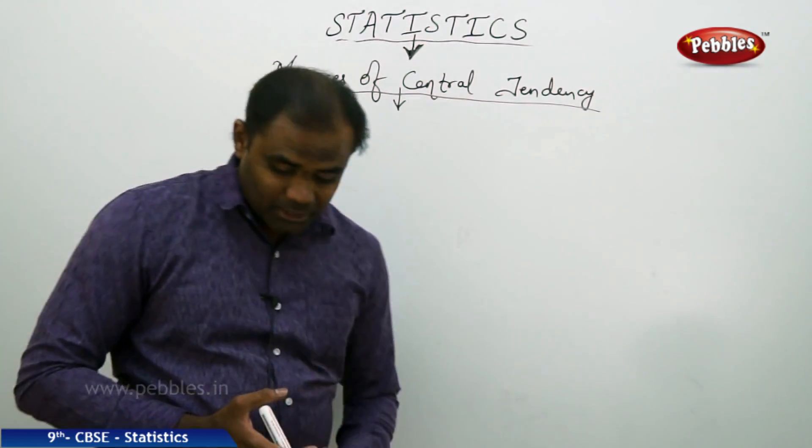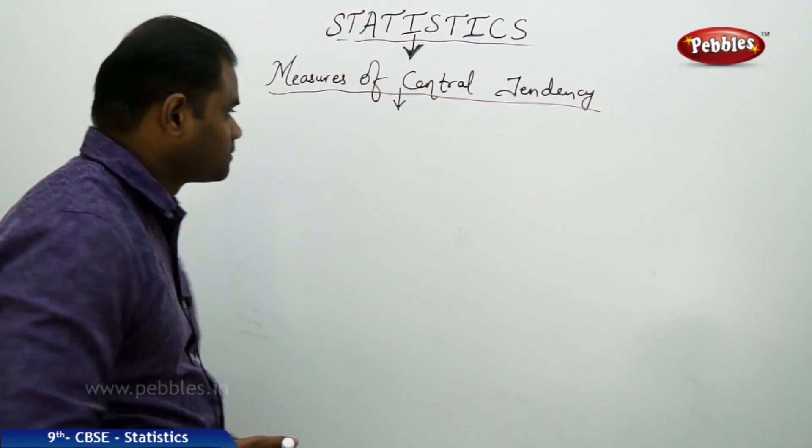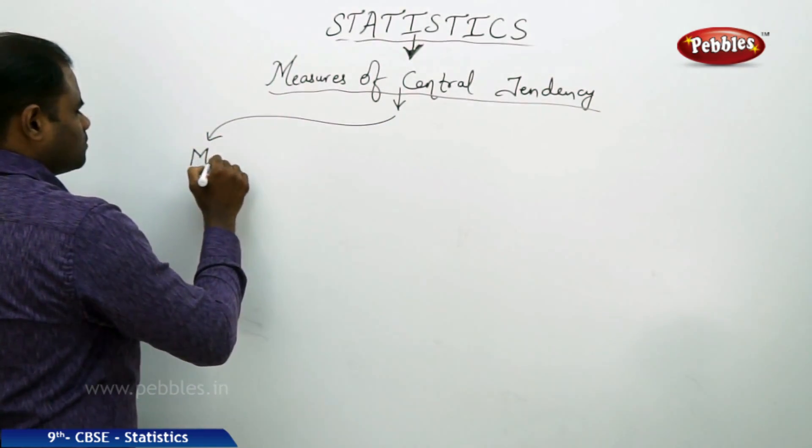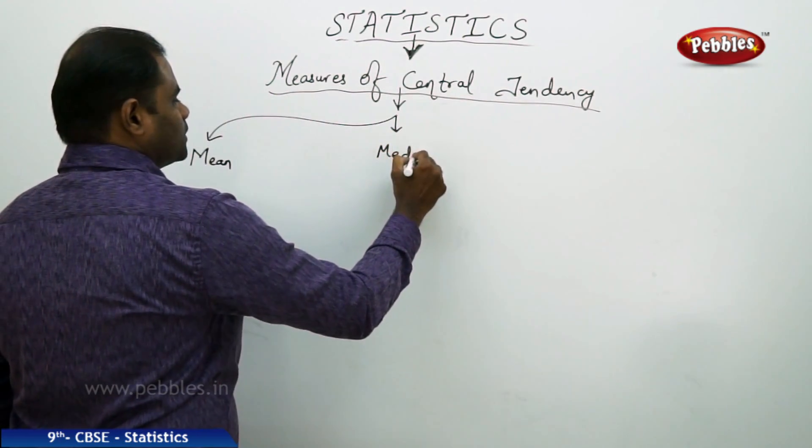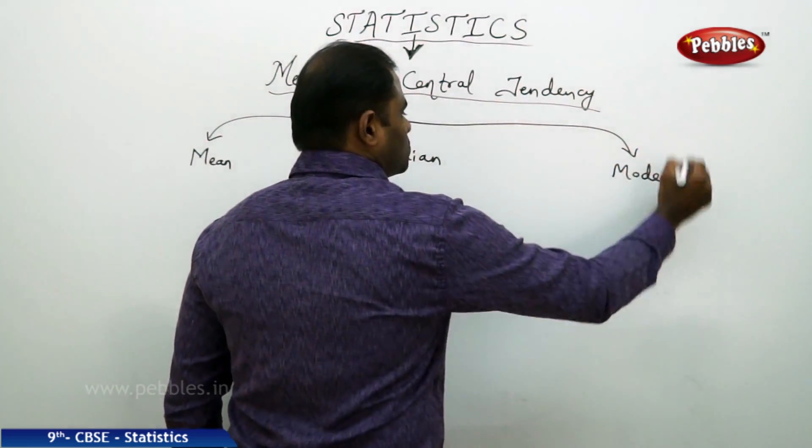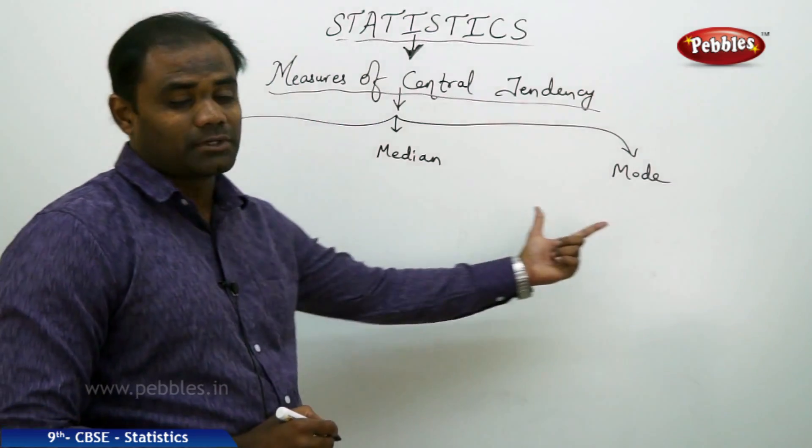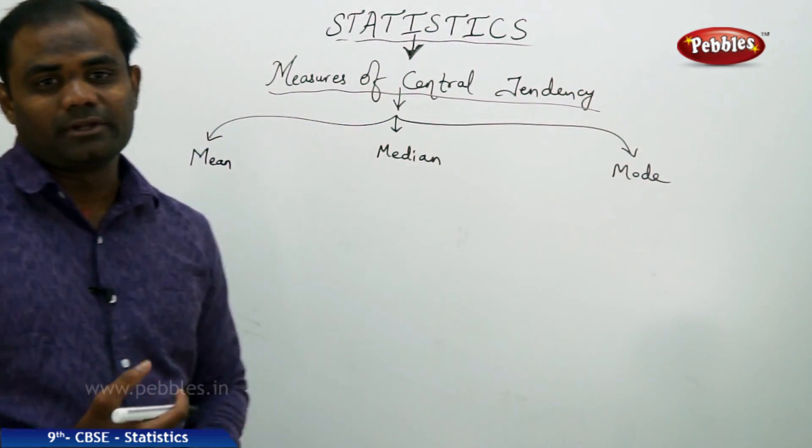There are three measures of central tendency. There are three measures of central tendency identified in the branch of statistics. One is mean, median, and the third is mode. So these are the three different types of measures of central tendency identified. Let's discuss these in brief.